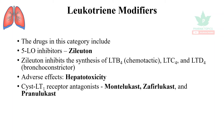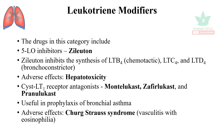Cysteinyl LT1 receptor antagonists include montelukast, zafirlukast, and pranlukast. They are useful in the prophylaxis of bronchial asthma. An important adverse effect is Churg-Strauss syndrome, which is inflammation of the blood vessels with eosinophilia.